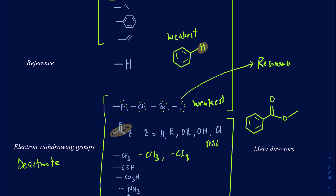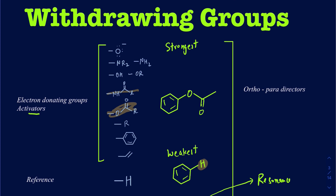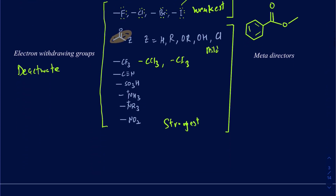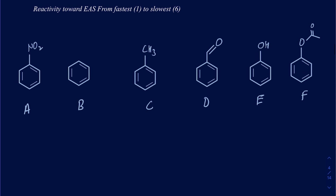Anytime you have a carbonyl carbon directly attached to the ring — whether that's an aldehyde, ketone, ester, carboxylic acid, or acid chloride — they are all going to be electron withdrawing. Based on whether a group is electron donating or withdrawing, you can tell whether a ring is activated or deactivated. Activated rings react faster in electrophilic aromatic substitutions, and deactivated rings react slower. I have an example set up here — let's figure out the reactivity order, calling one the fastest and six the slowest.